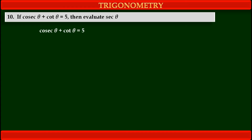Now see, the given equation is cosec θ plus cot θ is equal to 5, and we have to find sec θ. We know sec θ is the reciprocal of cos θ, so if we know cos θ, we can find sec θ. First, we have to change the trigonometric functions in our equation — cosec θ and cot θ — into their simple form of sine and cos.